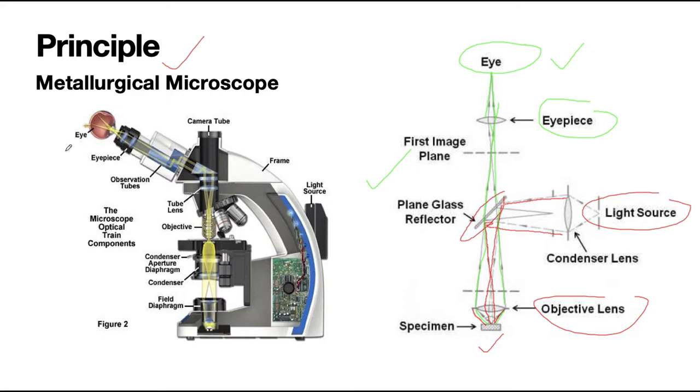The various components of a metallurgical microscope are eyepiece, observation tube, objective, frame, light source, condenser aperture diaphragm, condenser field diaphragm. So these are some of the important components which a metallurgical microscope usually consists of.